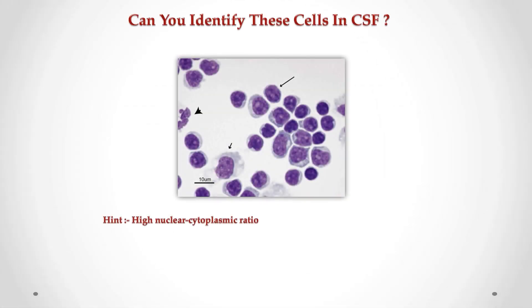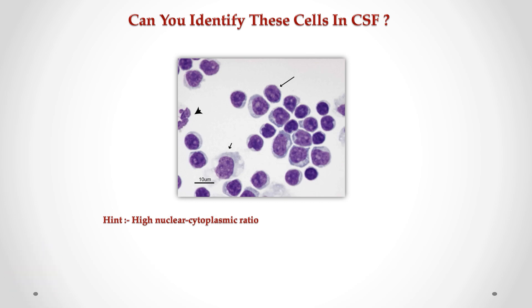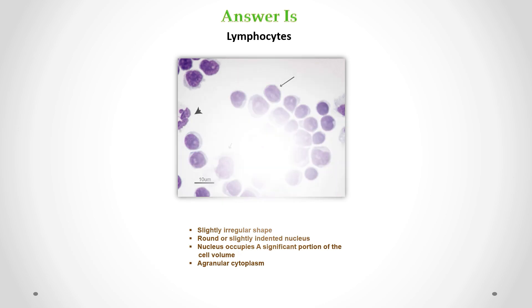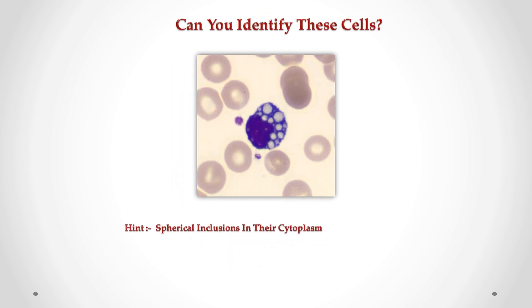Can you identify these cells in CSF? Correct answer is lymphocytes. We can see a slightly irregular shape, round or slightly indented nucleus. The nucleus occupies a significant portion of the cell volume, and there is a granular cytoplasm.